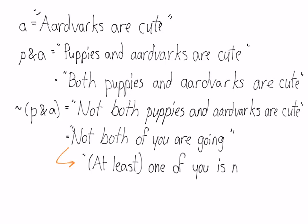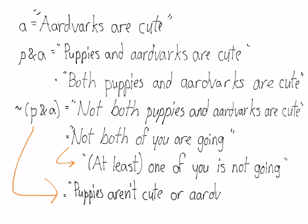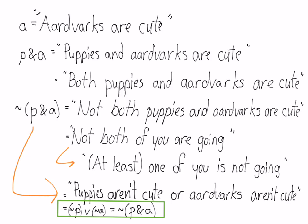Consider a similar sentence: 'NOT both of you are going.' This means that at least one of you is not going. NOT both of you are going means at least one of you is not going, but one of you may be going. Similarly, 'NOT both puppies and aardvarks are cute' means the same as 'puppies aren't cute or aardvarks aren't cute' — in other words, the negation of P or the negation of A. Notice how the conjunction became a disjunction. This is a general principle, and it always applies.